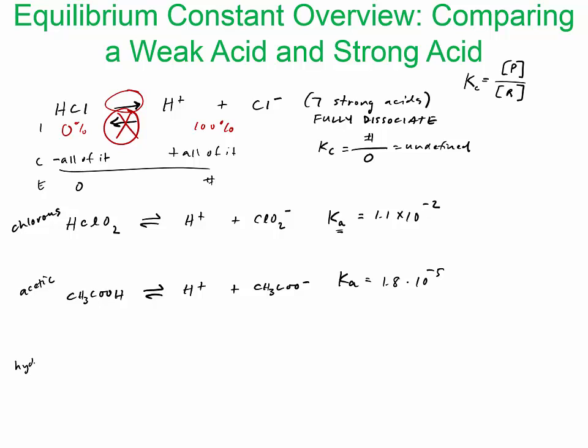Now let's take hydrocyanic acid, HCN. If we wrote the equilibrium expression, we would have HCN gives H+ plus CN-, the cyanide ion. This equilibrium constant would be 4.9 times 10 to the negative tenth.